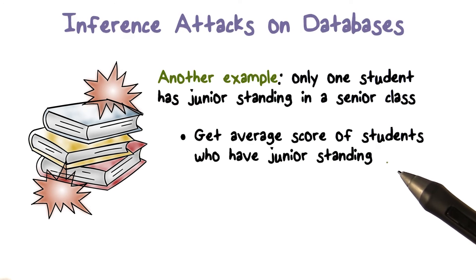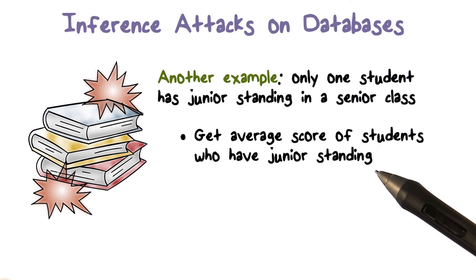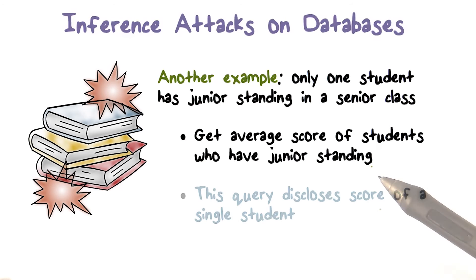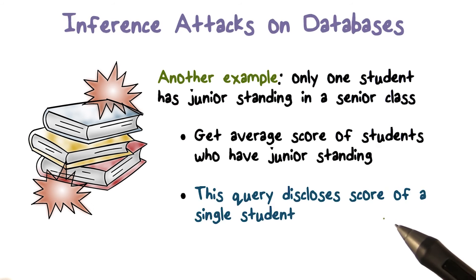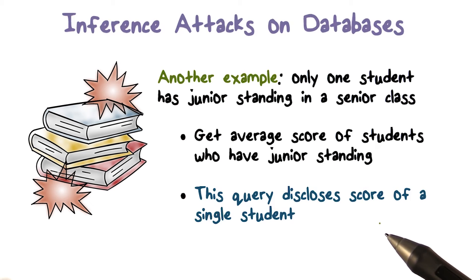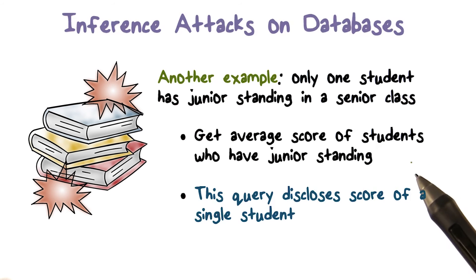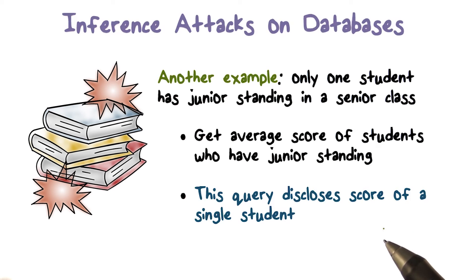In that case, we're still running the average score query, so it will take the tuples where the standing is junior, compute the average on those, and return that value. Well, that's a problem if it does that, because in this case the query is actually going to disclose the exact score. If you're doing an average for one value, the average discloses the value itself.